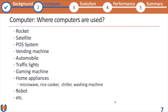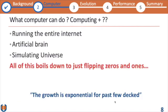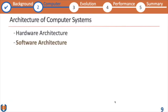Here are some examples of where we use computers: starting from rockets and satellites, most systems, vending machines, automobiles, traffic lights, everywhere, including home appliances. Nowadays it is very difficult to find any place where computers are not used. If you think the computer can only do computing — it's actually running the whole internet, it has an artificial brain, and it can simulate the universe. But the most interesting thing is that everything a computer does is just the flipping of zeros and ones.